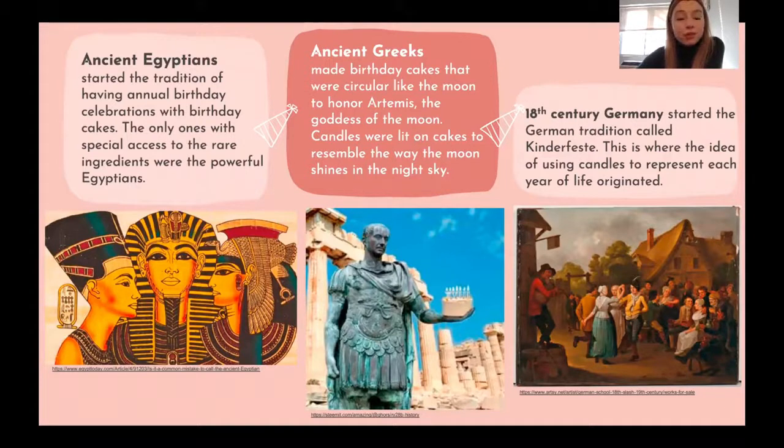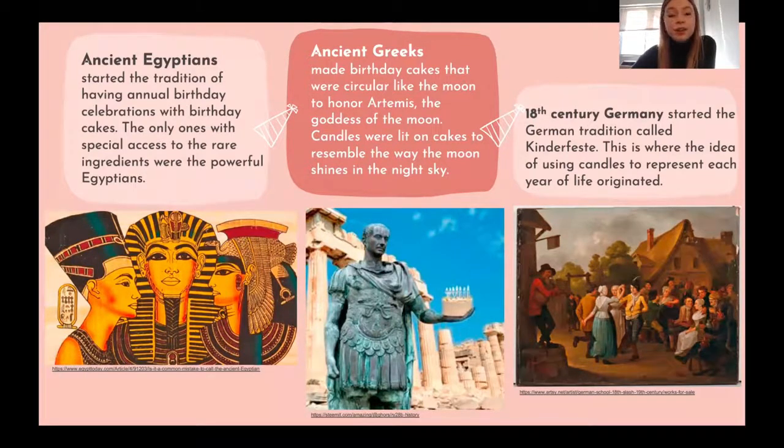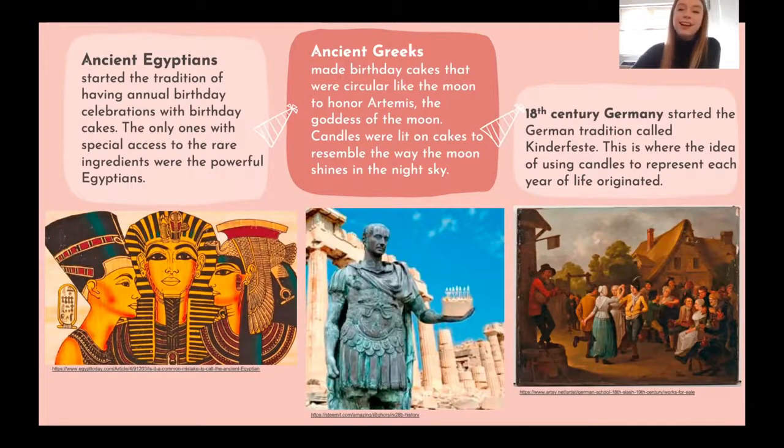Ancient Egyptians started the tradition of having annual birthday celebrations with birthday cakes. Only ones with special access to the rare ingredients were the powerful Egyptians, such as the pharaohs. Ancient Greeks made birthday cakes that were circular like the moon to honor Artemis, the goddess of the moon. Candles were lit on cakes to resemble the way the moon shines in the night sky. 18th century Germany started the German tradition called Kinderfest. This is where the idea of using candles to represent each year of life originated.